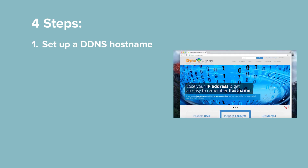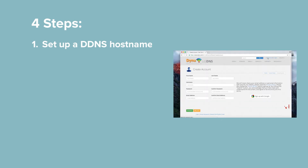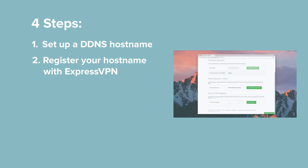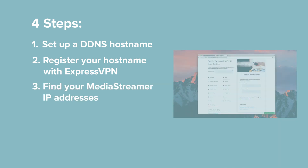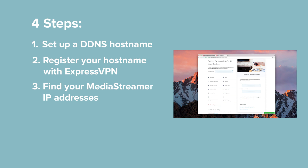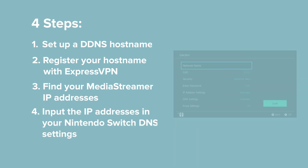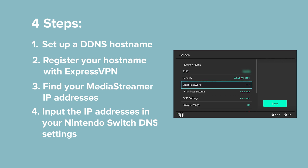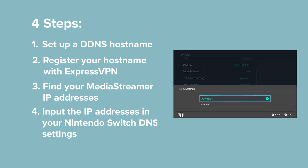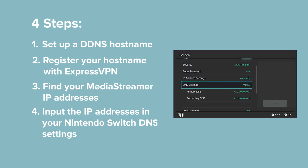First, you'll set up a DDNS hostname through a third-party service. Second, you'll register the hostname with ExpressVPN. Third, you'll look up your MediaStreamer IP addresses on the ExpressVPN website. Fourth, you'll input the IP addresses in your Nintendo Switch's DNS settings.